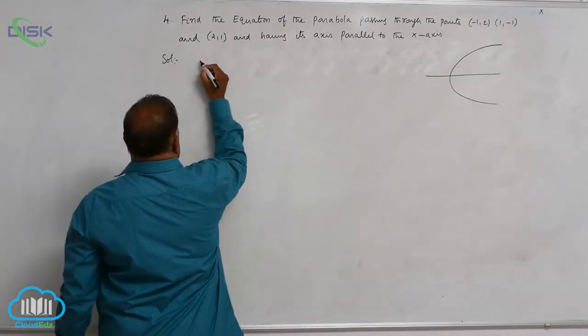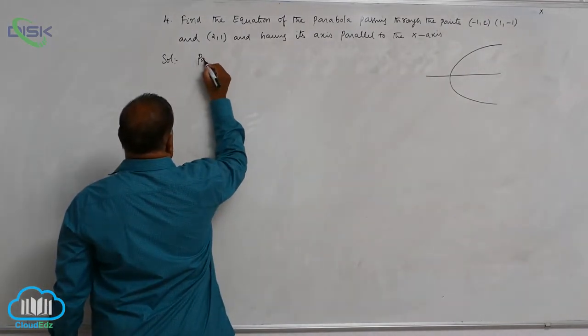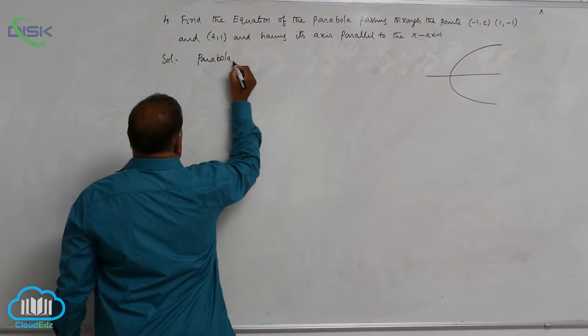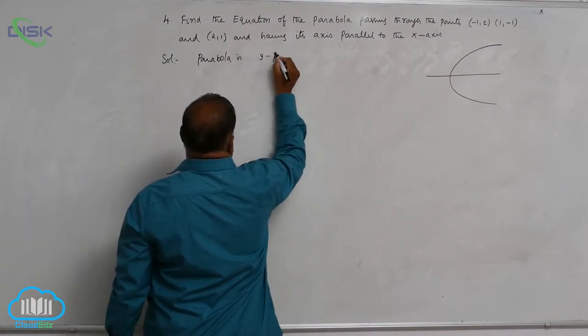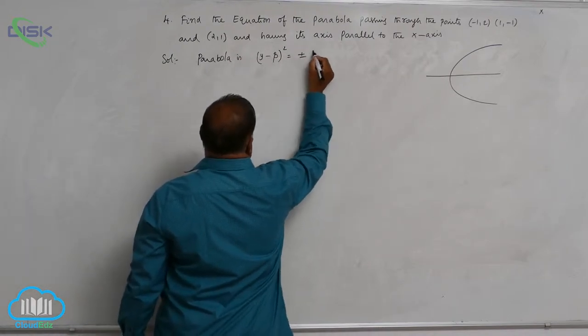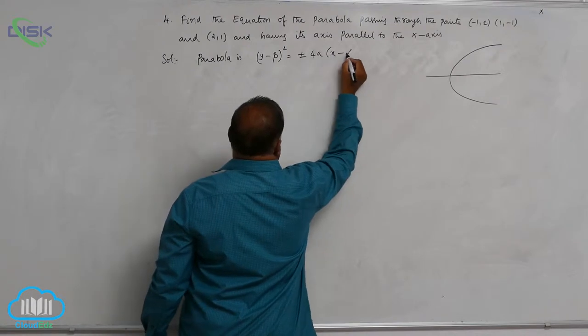Now the parabola is (y - β)² = ±4a(x - α).